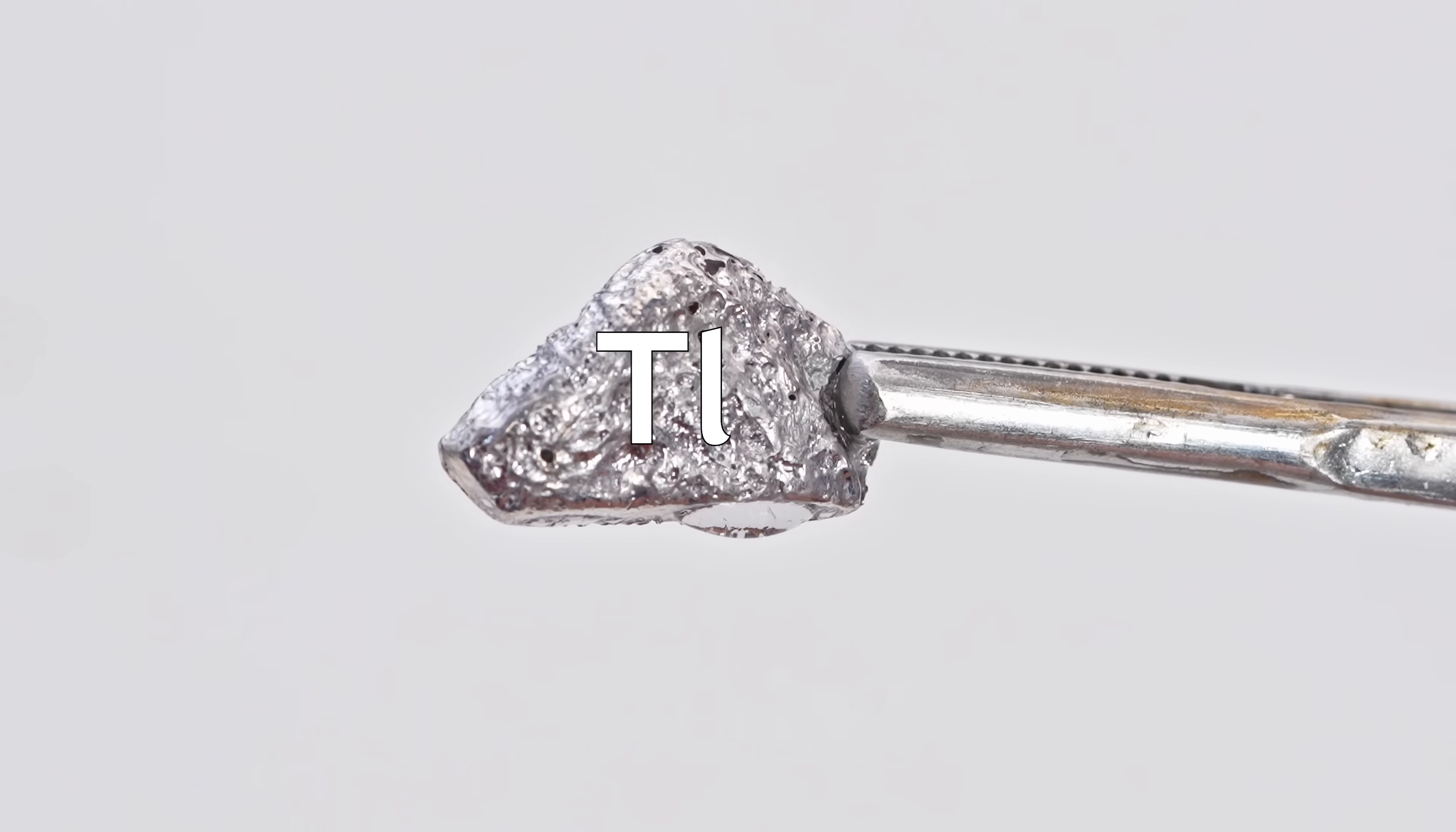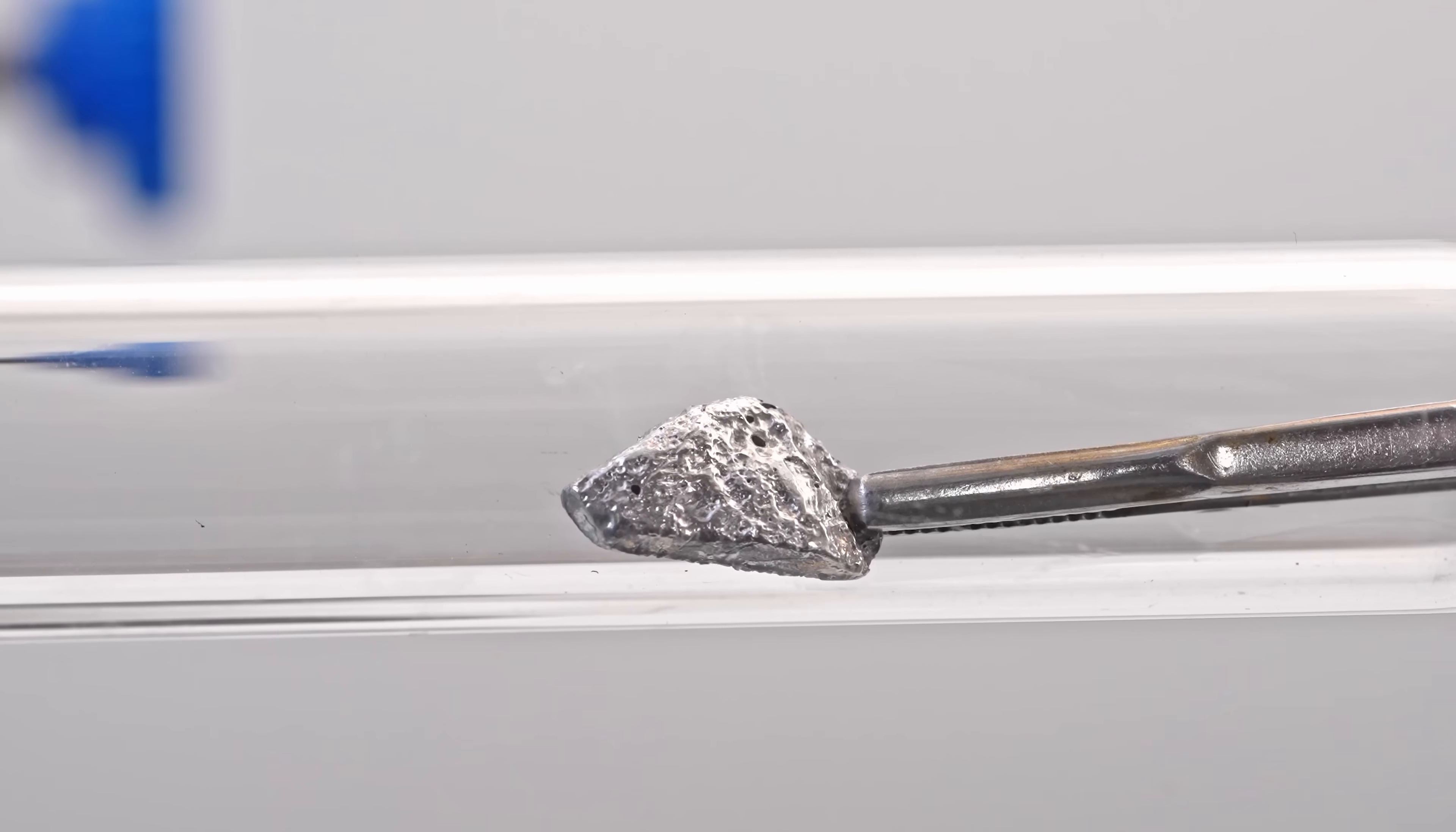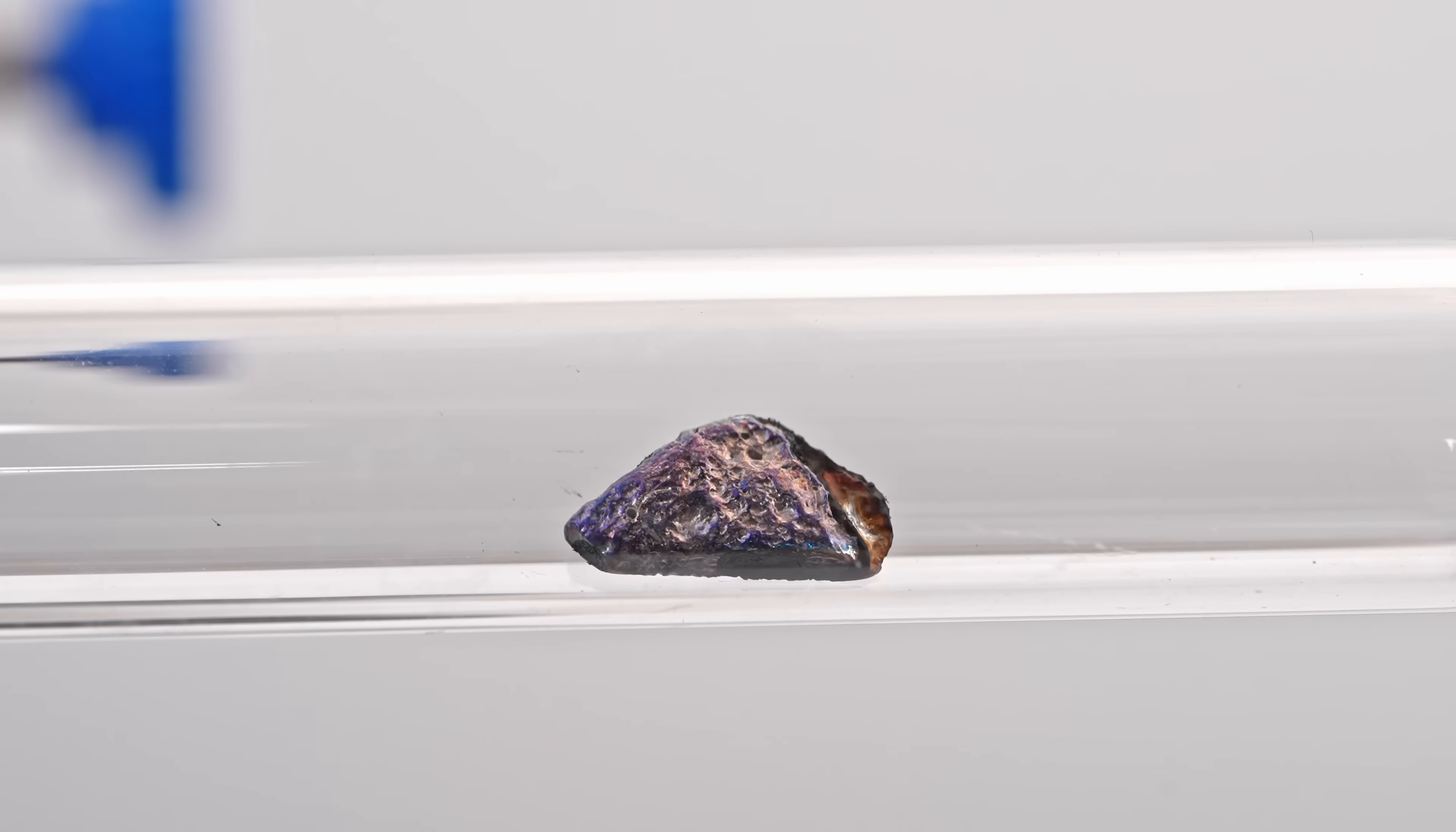Here is a shiny piece of thallium, which reacts uniquely with ozone. I'll place it in a glass tube and pass ozonated oxygen through it. Upon contact, thallium changes color, first to light brown, then to blue. This is due to both the formation of thallium oxides and light refraction through the oxide film.